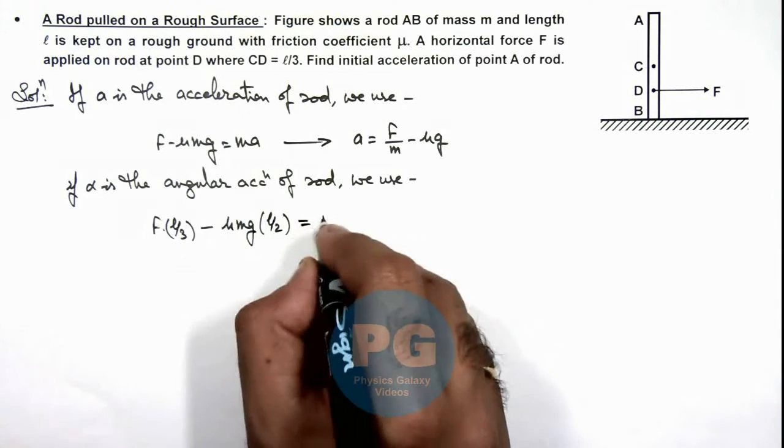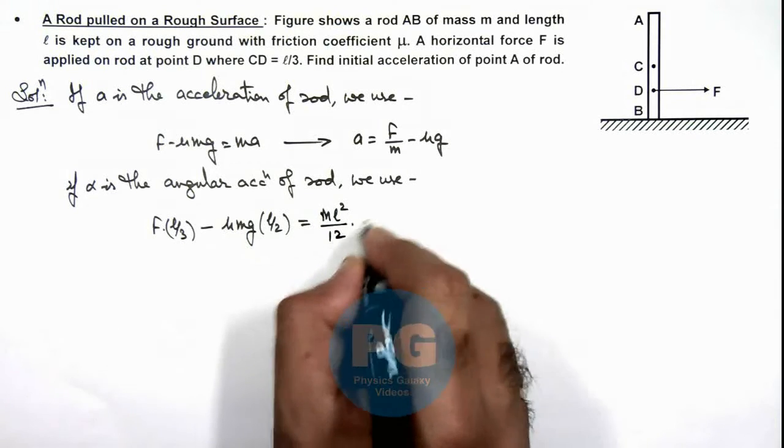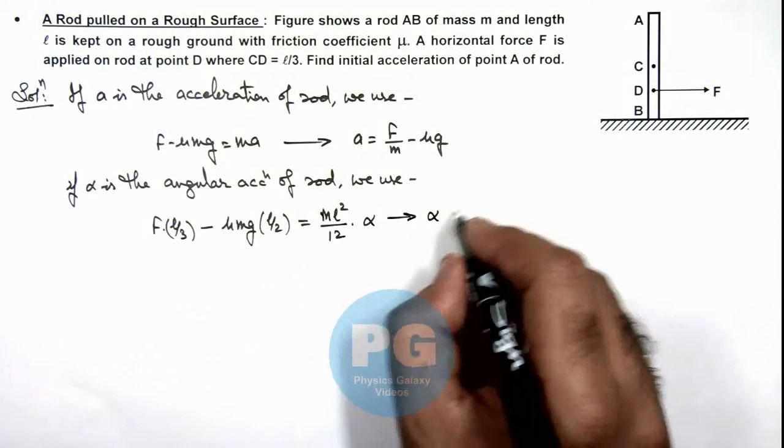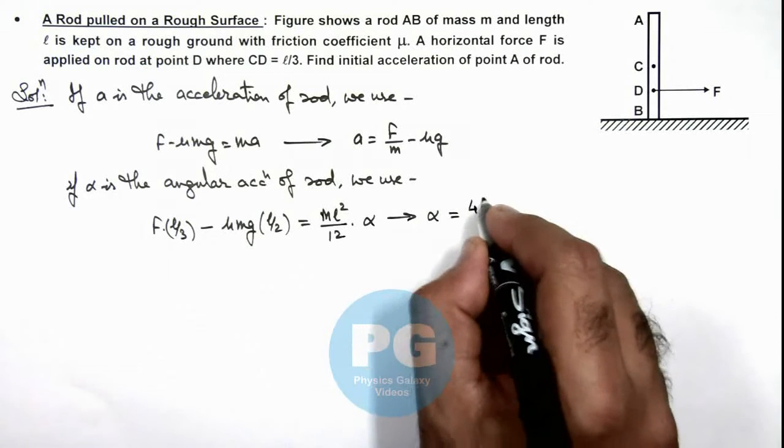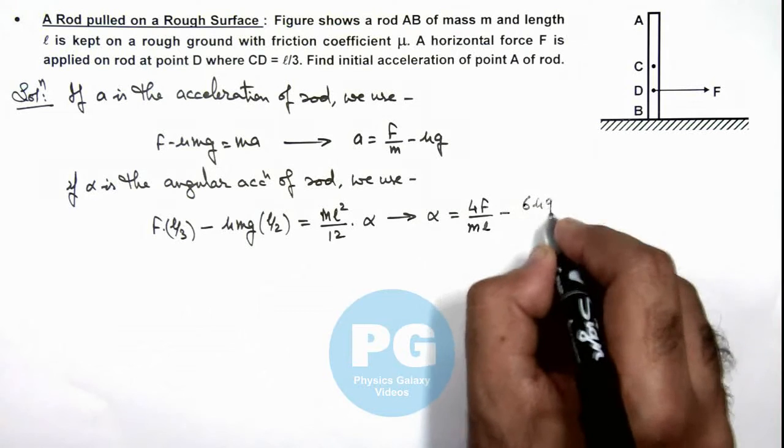Should be equal to ml² by 12 multiplied by α. And this will give us the value of α, that is 4F upon ml, minus 6μg upon l.